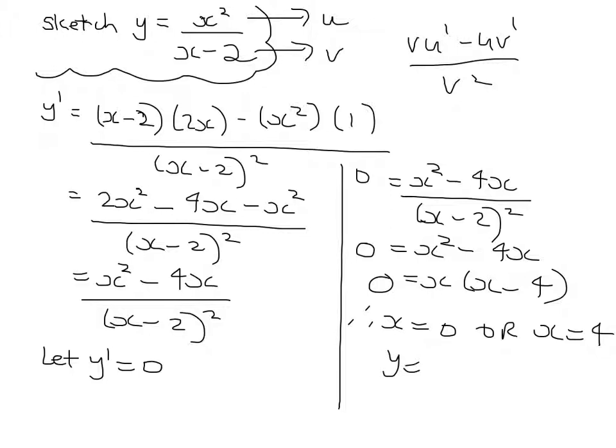If we sub in the y values to get the point, y equals 0 or y equals 4 squared over 2, so that's 8. So that's 0, 0 and 4, 8.